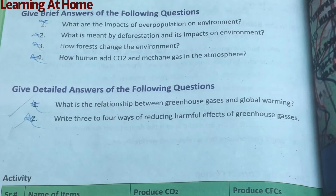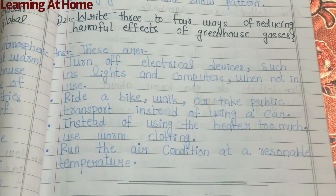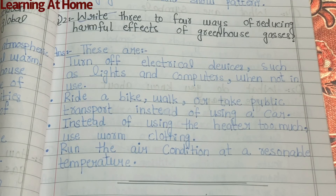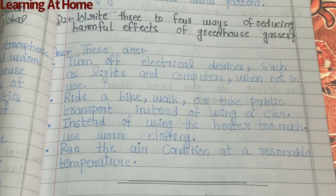Question number two: write three to four ways of reducing the harmful effects of greenhouse gases. Answer: turn off electrical devices such as lights and computers when not in use. Ride a bike, walk, or take public transport instead of using a car. Instead of using the heater too much, wear warm clothes. Run the air conditioner at a reasonable temperature.